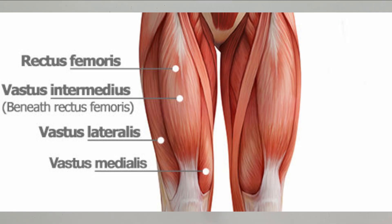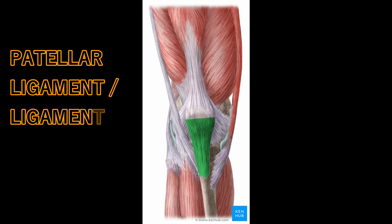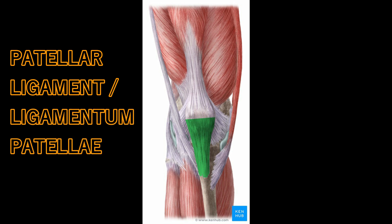The quadriceps femoris is a group of four individual muscles: the rectus femoris, the vastus lateralis, the vastus medialis, and the vastus intermedius. These muscles differ in their origin but they share a common quadriceps femoris tendon, which inserts into the patella.